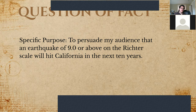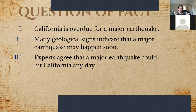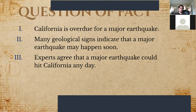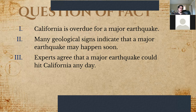Questions of fact can be framed by simply providing the logical evidence for why the claim is supported. Referring back to chapter 15 when we talked about the syllogism — we just present the simple claim that California is overdue for a major earthquake. My evidence is then that many geological signs indicate a major earthquake may happen soon, and that experts agree a major earthquake could hit California any day. These two pieces of evidence then prove my claim true.